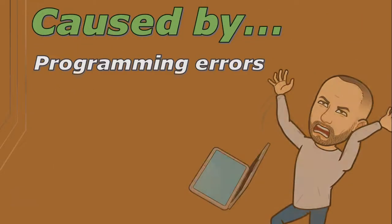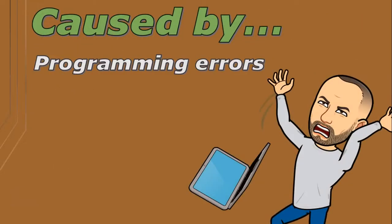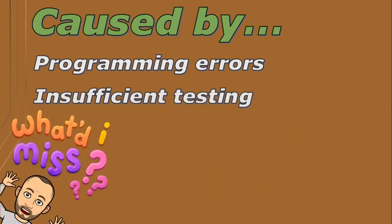Software bugs are mainly caused by programming errors made by developers while writing code, such as logic errors, syntax errors, or using functions incorrectly. Insufficient testing can also fail to uncover bugs before the software is released. That is why it is important to test all possible cases, even testing with bad or incorrect data to see if the software can prevent or detect incorrect input or processing of that data.